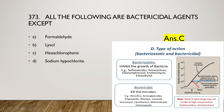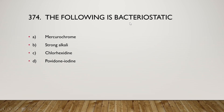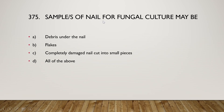Bactericidal means to kill microbes, while bacteriostatic means to inhibit the growth of bacteria. Next: which of the following is bacteriostatic — mercurochrome, strong alkali, chlorohexidine, or povidone iodine? The right answer is option A, mercurochrome is a bacteriostatic chemical agent. Finally: samples of nail for fungal culture may be debris under the nail, nail flecks, completely damaged nail cut into small pieces, or all of the above? The answer is option D, all of the above. These are all 25 questions of this part.